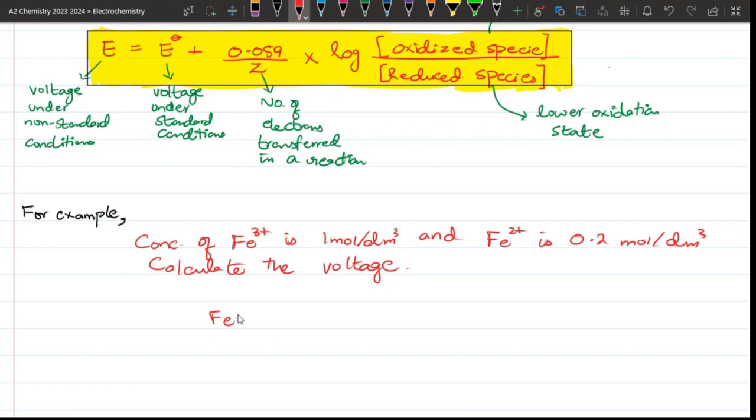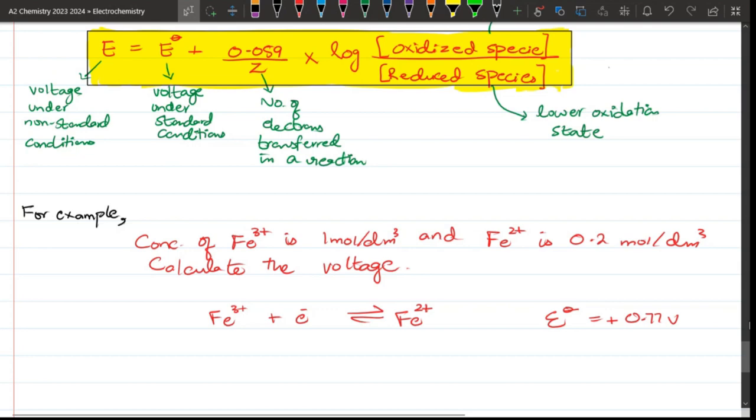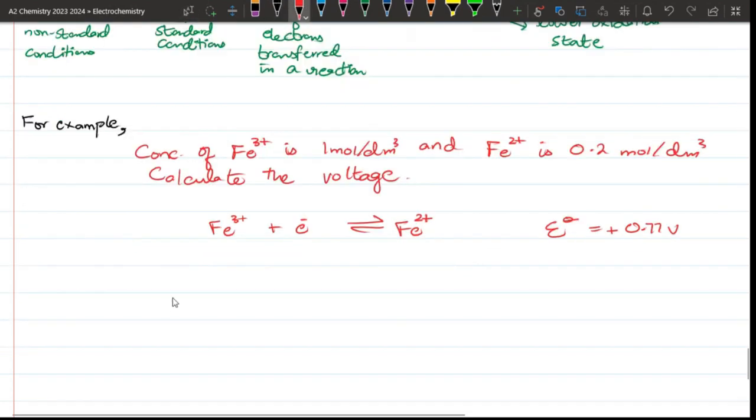We will see the equation. Fe³⁺ plus electron gives us Fe²⁺. E° value is 0.77 volts. Now we will put the equation: E equals to E° 0.77 plus 0.059 over Z. Number of electrons transferred in the reaction - how many electrons are here? One.